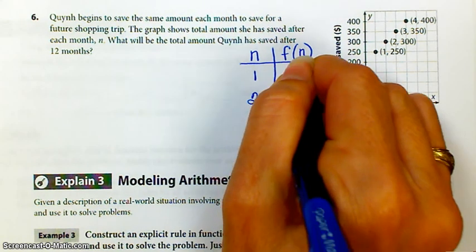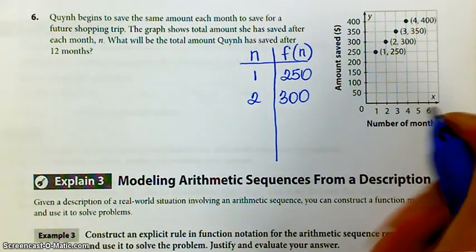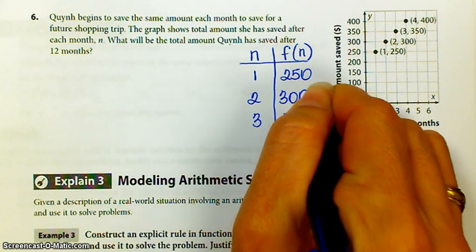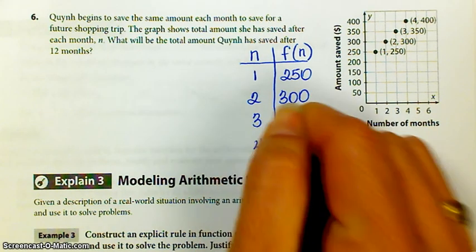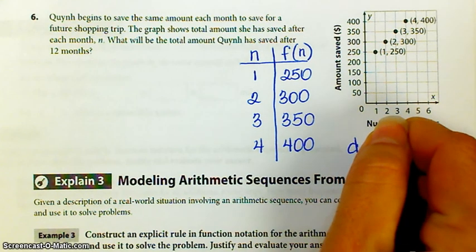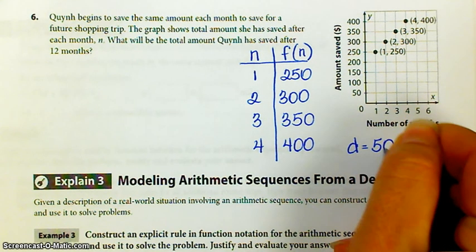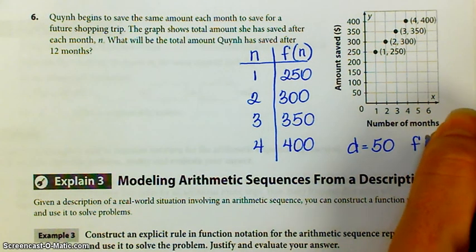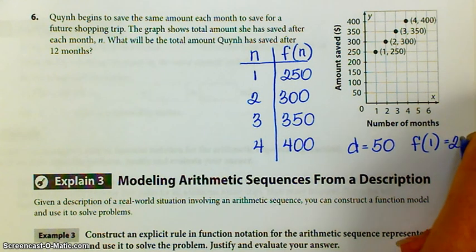1 and 250. 2 and 300. 3 and 350. 4 and 400. It becomes pretty obvious that the common difference is 50. And my first value is 250.